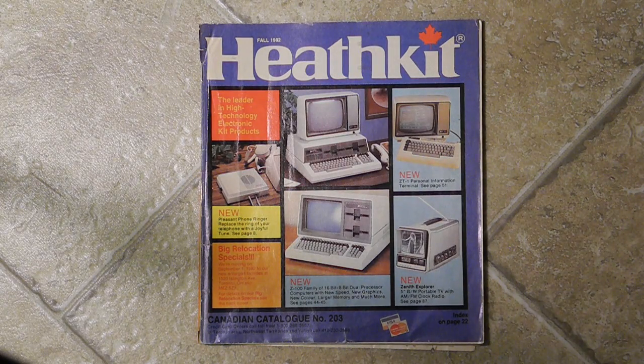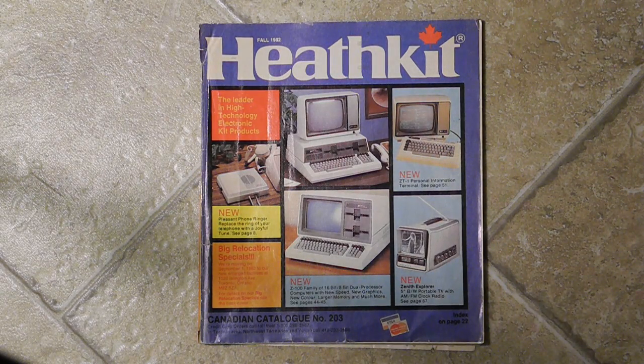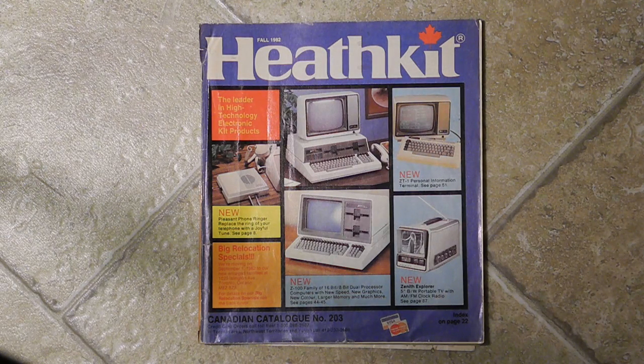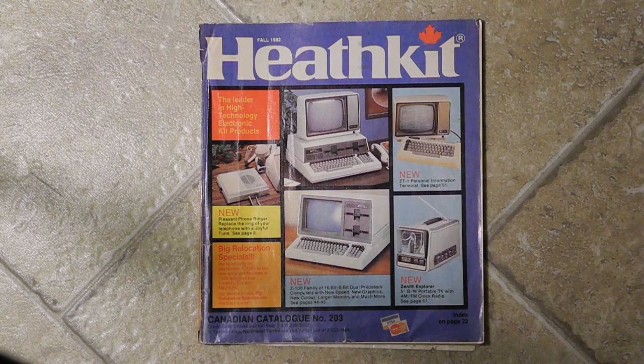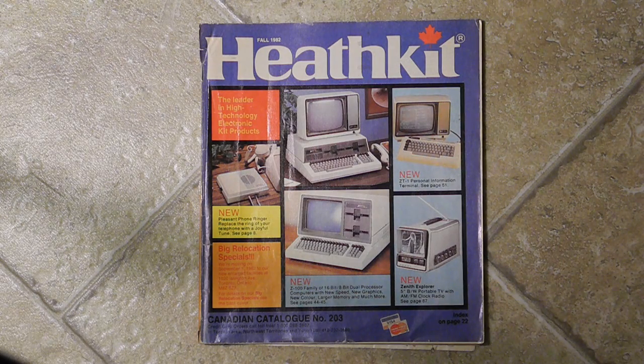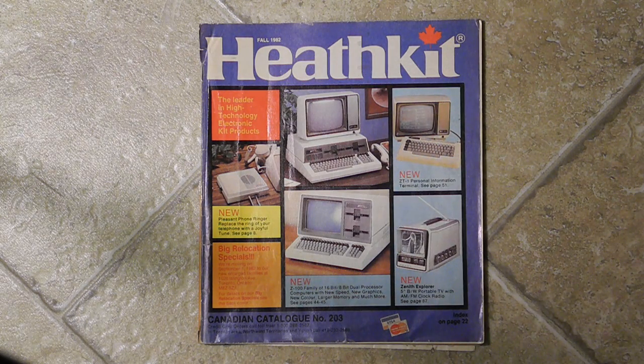Heathkit was a manufacturer of electronics in kit form. Their product line included amateur radio, test equipment, and various consumer products. By building a piece of electronics you could save money and gain the satisfaction of having assembled it yourself.